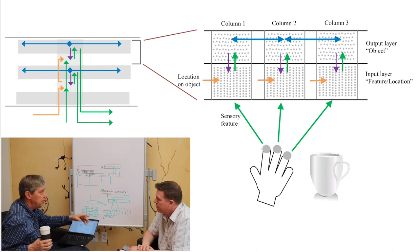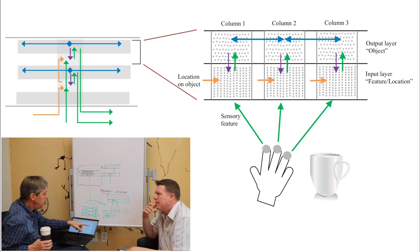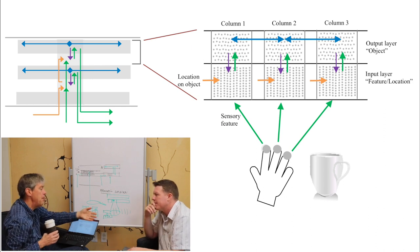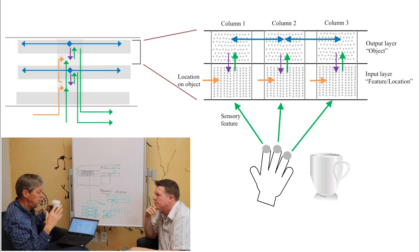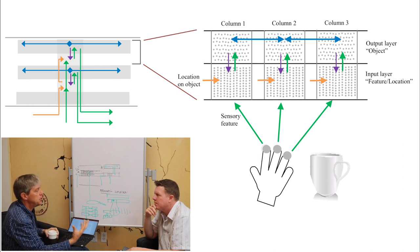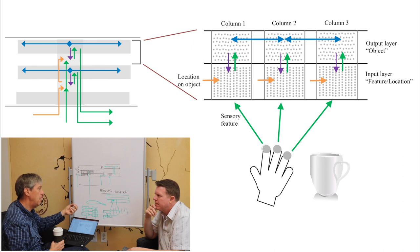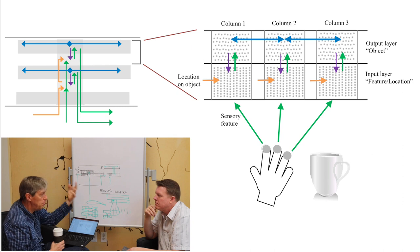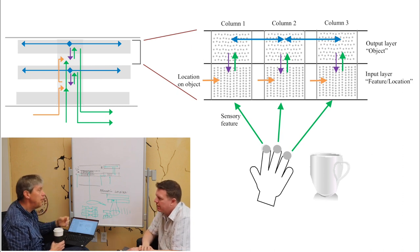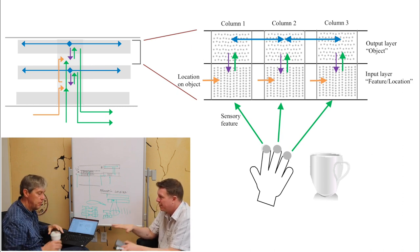But at any point in time, each finger only gets partial input. And each finger may not have enough information to identify this. But they're all trying to do that. So imagine what the long-range connections in the output layer let them do is settle on an answer that's consistent with all the inputs and do it very quickly. So imagine what input on my one finger says it's object A, B, or C. The input on my other finger says it could be object A, R, and S. And the other one, the third finger says it could be object A, Z, and W.